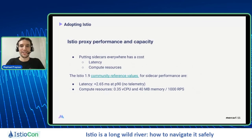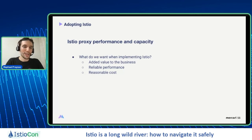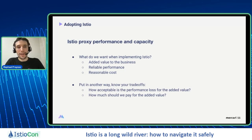The next adoption challenge is about Istio proxy performance and capacity, because putting sidecars everywhere has a huge cost — latency, but mostly compute resources. When implementing Istio, we usually want added value to the business: agility, observability, security. We want reliable performance to minimize the performance loss from data path overhead and keep reliable systems. And we want reasonable cost by consuming and paying only for what we need. It's about knowing your trade-offs: how acceptable is the performance loss for the added value, and how much should we pay for it?